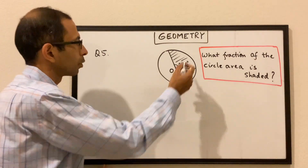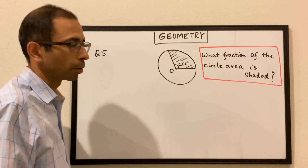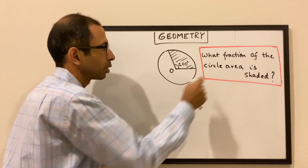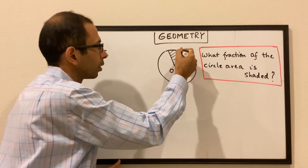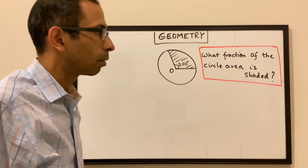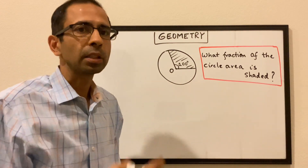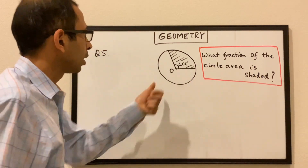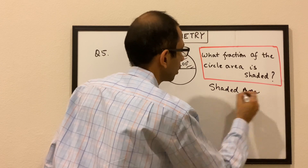Now question number 5. We have a circle with center O and this angle here is 100 degrees. We have to find what fraction of the circle area is shaded — essentially we have to find the ratio of the shaded area to the total area. That's how we can find how much fraction is shaded.